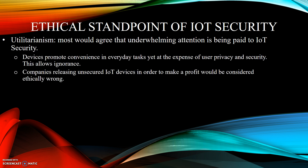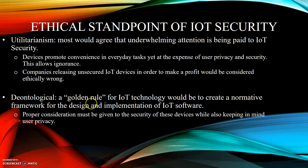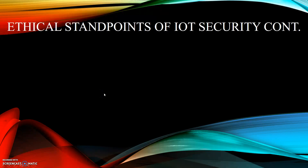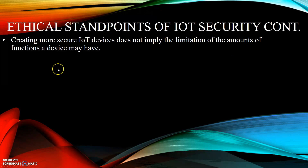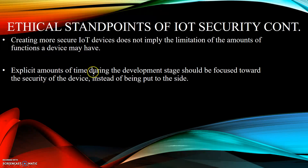Ethical Standpoints of IoT Security. From a utilitarian perspective, underwhelming attention is being paid to IoT security. Devices promote convenience for everyday tasks yet at the expense of user privacy and security, allowing ignorance — users are not concerned with how much privacy or security they are losing because the device is so convenient. Companies releasing unsecured IoT devices in order to make a profit would be considered ethically wrong. A deontological standpoint would consider a golden rule for IoT technology to be creating a normative framework for the design and implementation of IoT software. However, proper consideration must be given to the security of these devices while also keeping in mind user privacy. Creating more secure IoT devices does not imply limiting the functions a device may have, and a device being safer does not mean it functions less well. Time spent during the developmental stage should be focused toward security rather than being set aside, and hardware must factor in requirements for antivirus software.